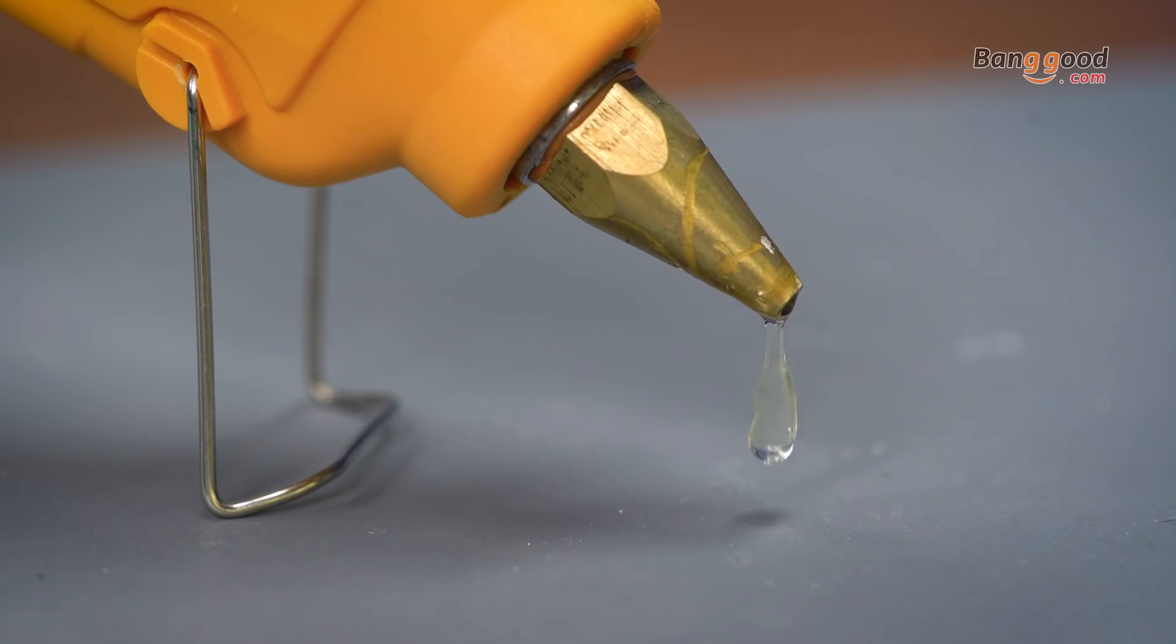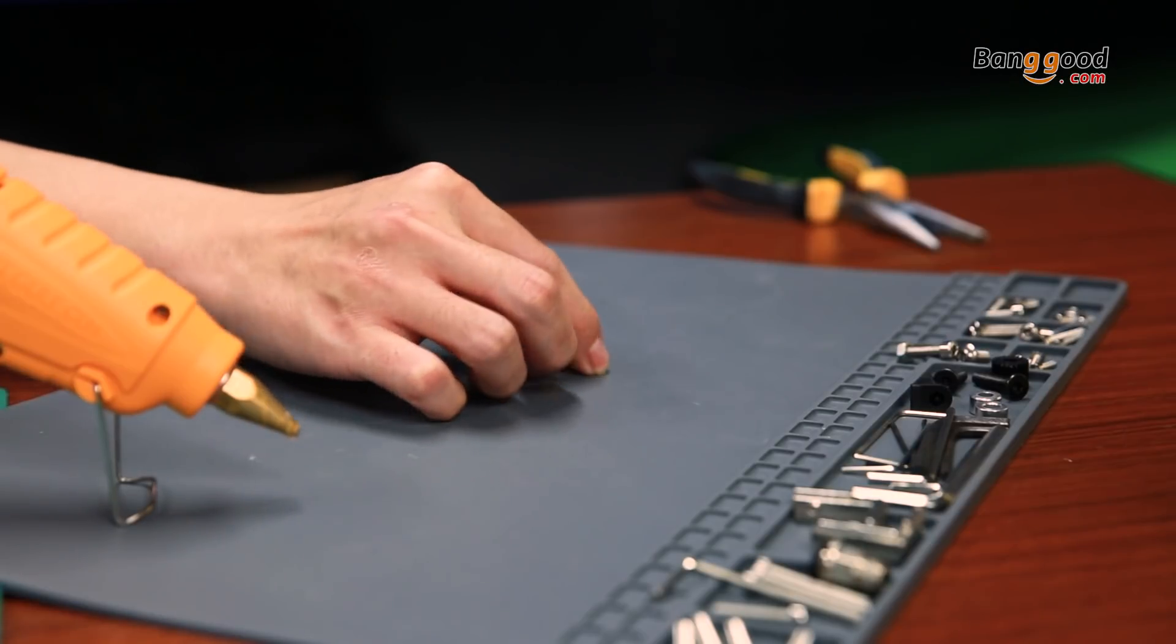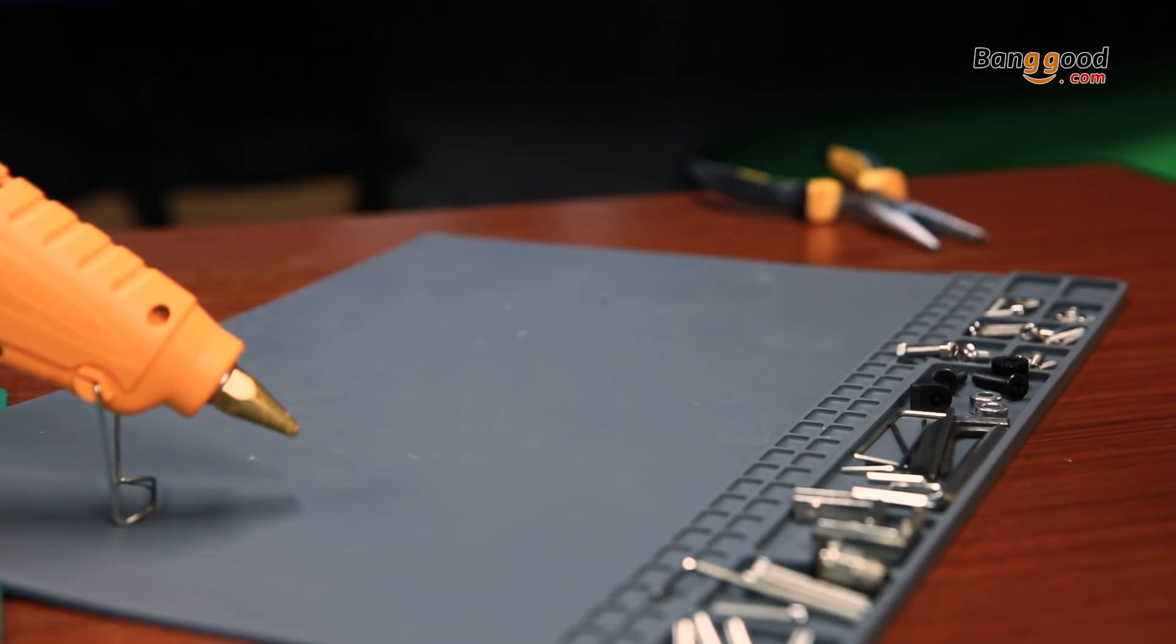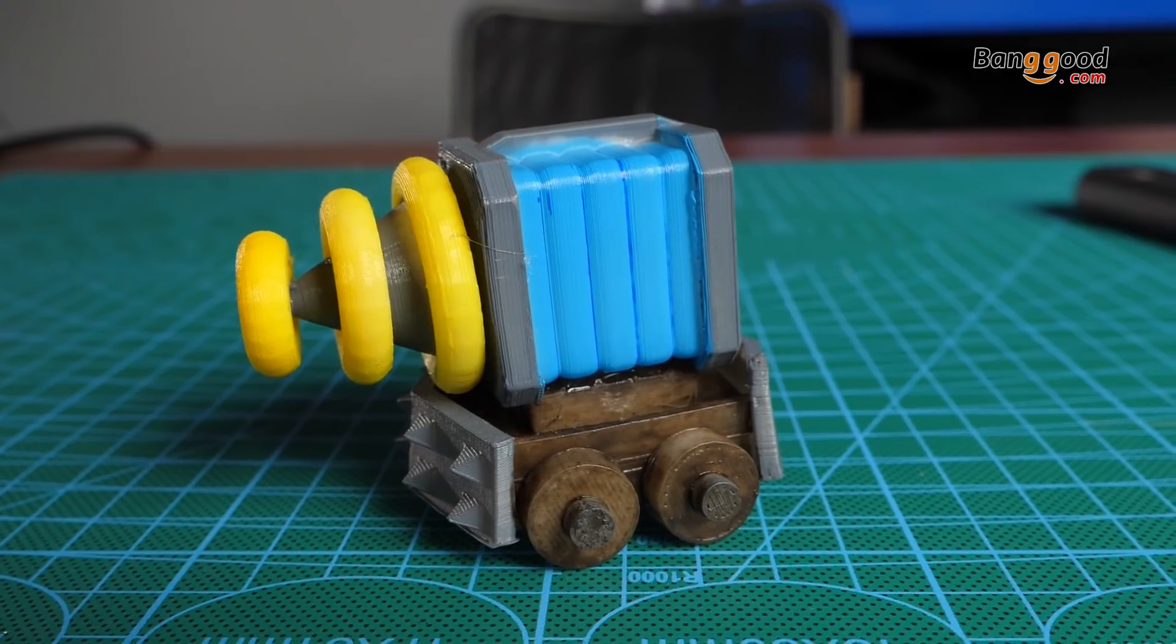To avoid the hot glue being annoying, I would suggest you to put a heat-resistant mat on the table. Well, here is the final result.